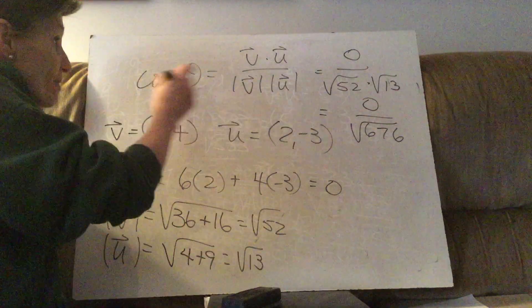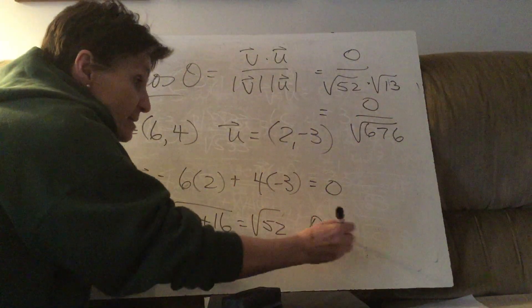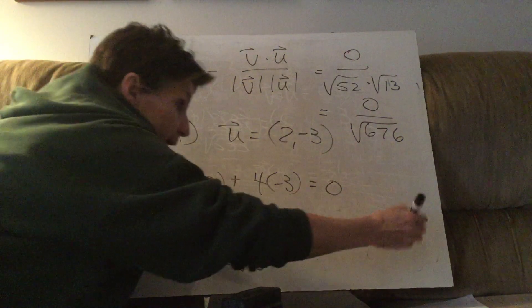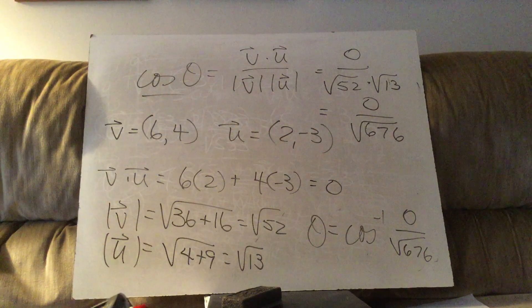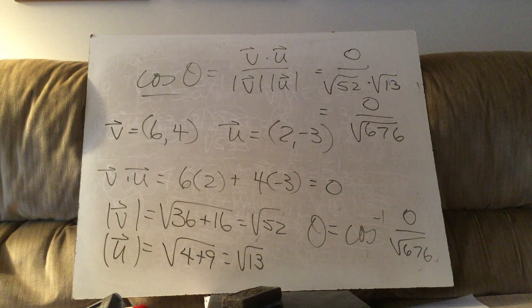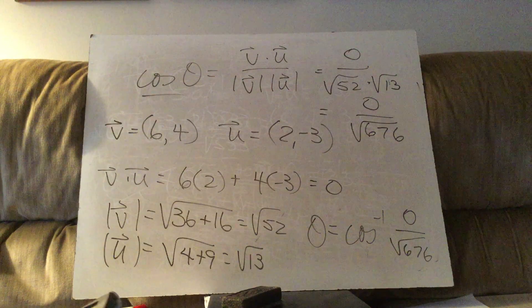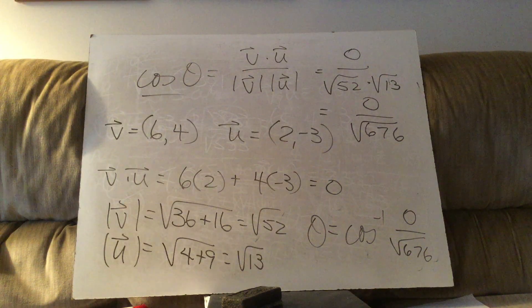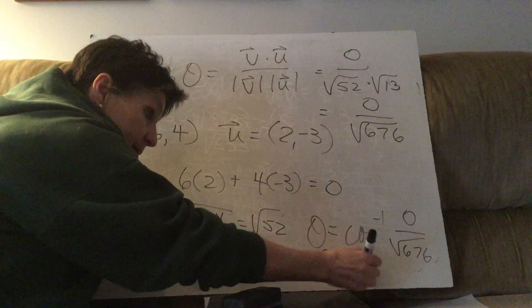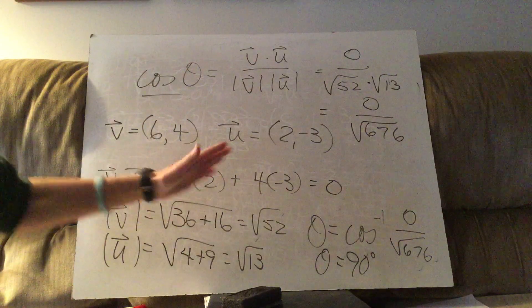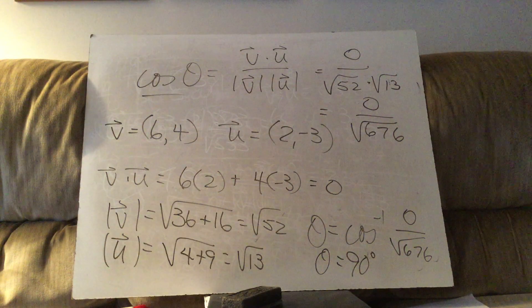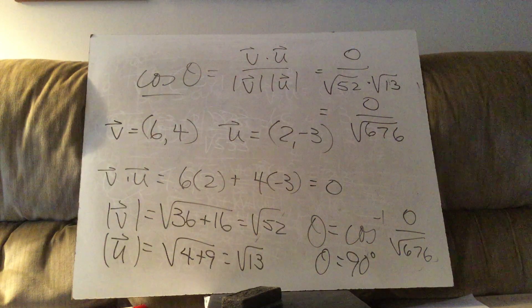That's the cosine of theta. To get the answer, we take second cosine of zero divided by the square root of 676. Did you get 90? These two vectors are forming a 90 degree angle, which means the vectors are perpendicular to each other.